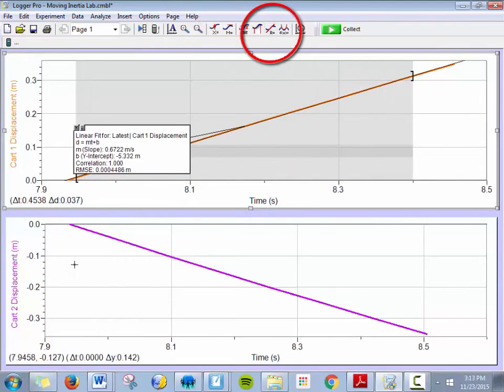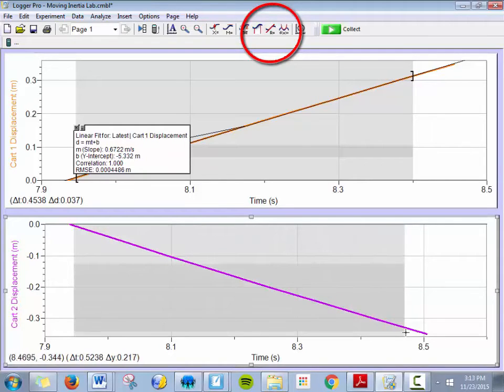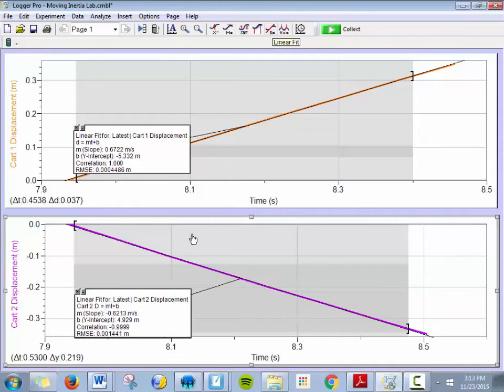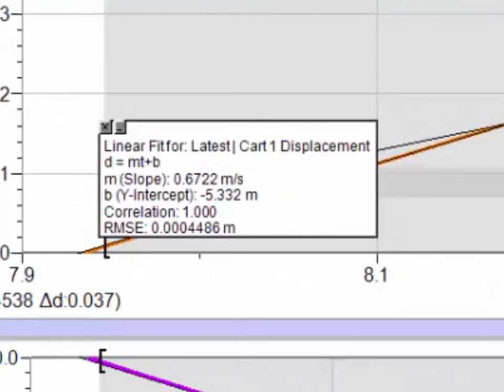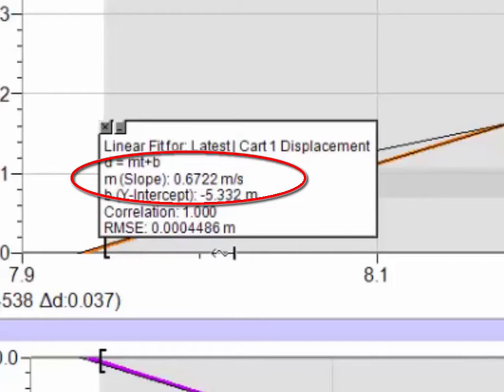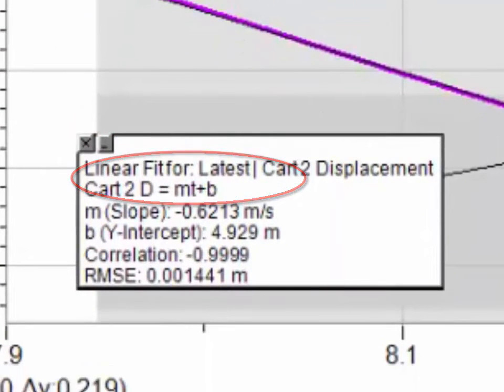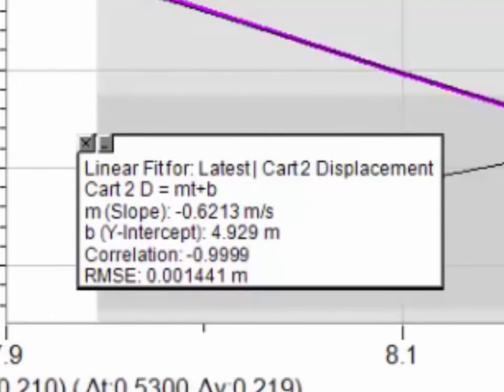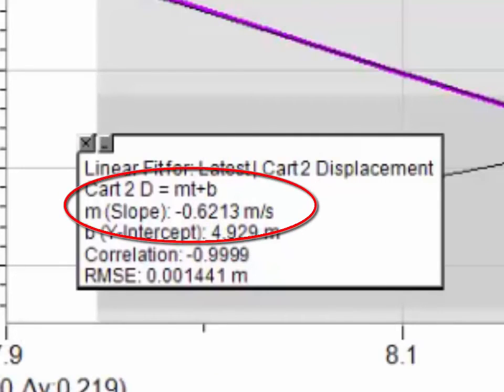The way we do that is by clicking on the linear fit button. The linear fit button will give us the slope of this graph. As we zoom in, we'll notice that the slope here is given to us in meters per second. I wonder what that could tell us. Notice this also has a positive slope and the second graph has a negative slope. I wonder what positive and negative slopes in a DT graph represent.